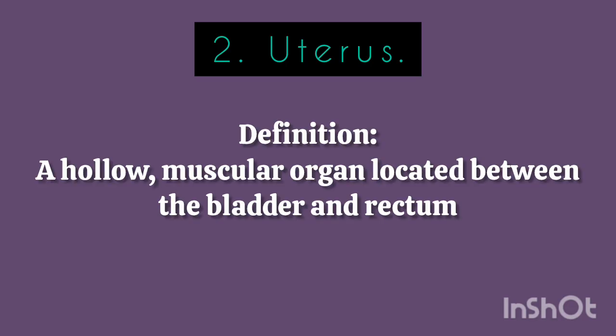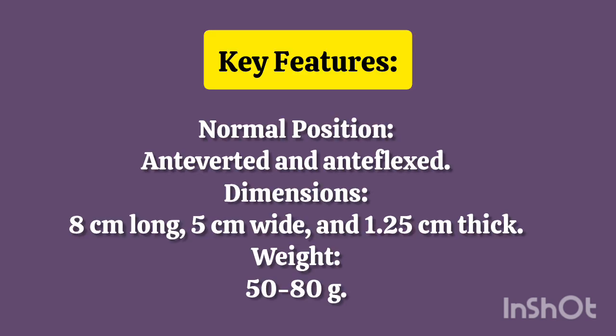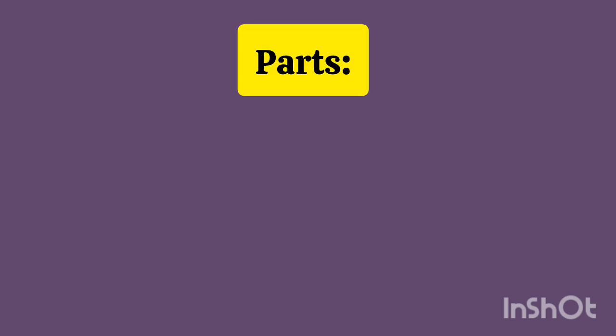Uterus Definition – A hollow, muscular organ located between the bladder and rectum. Key Features: Normal Position – Anteverted and Anteflexed. Dimensions – 8 cm long, 5 cm wide, and 1.25 cm thick. Weight – 50 g.